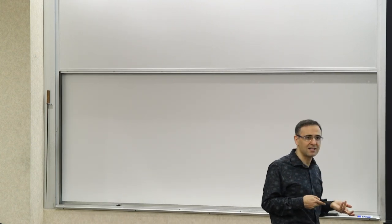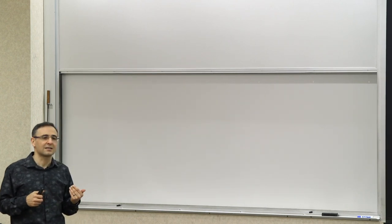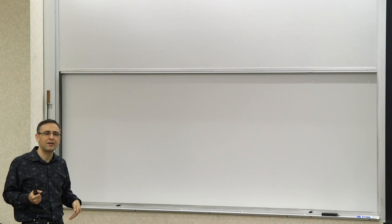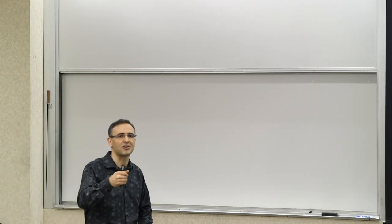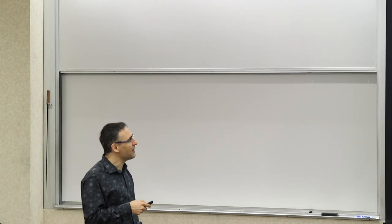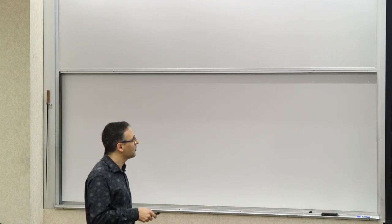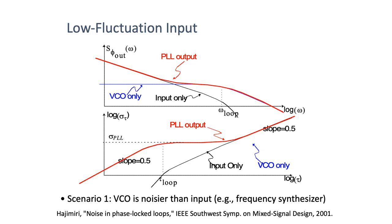There are different scenarios that arise and apply to different applications. For frequency synthesis, you have a clean reference and are trying to force a VCO to track it. Now imagine you have both a noisy VCO and a noisy reference, but the input is less noisy than the VCO — the VCO alone has higher phase noise than the PLL. If the input were the only noise source, you'd get the black curve. If the VCO were the only noise source, you'd get the blue curve. The overall PLL output phase noise combines these.